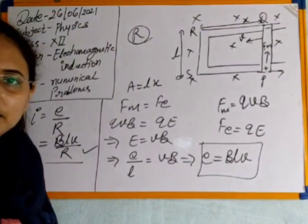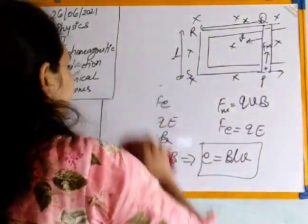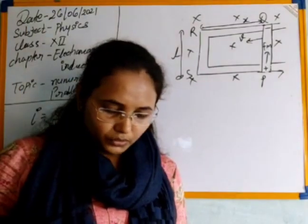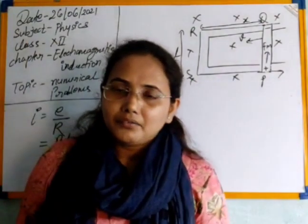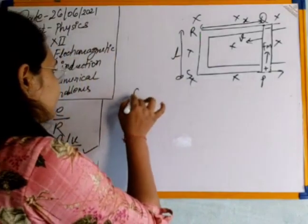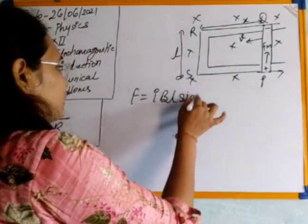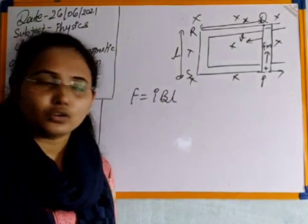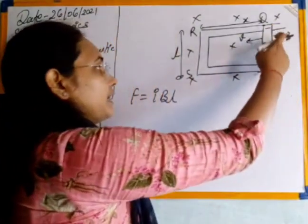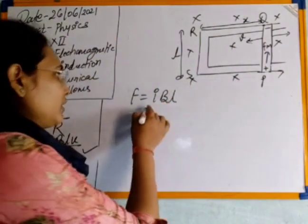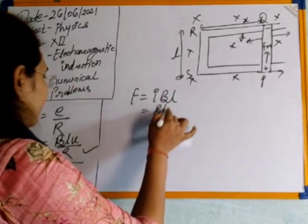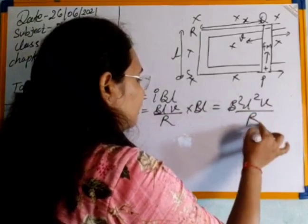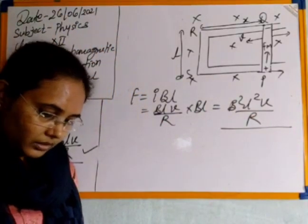For the second part, the force experienced by the loop: according to the Lorentz concept, for any moving conductor the force is F = BIl·sin(theta). Here theta = 90° because the current element is perpendicular to the magnetic field, so sin(theta) = 1. Substituting I = Blv/R: F = B × (Blv/R) × l = B²l²v/R. This is the expression for the force on arm PQ.